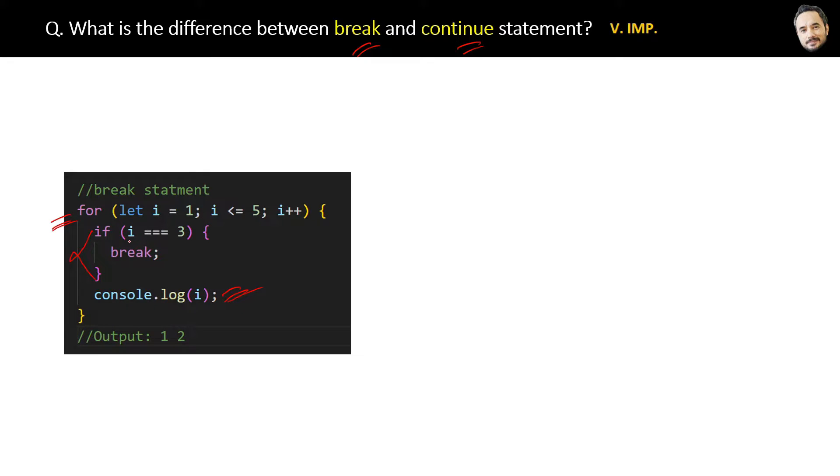one if condition here, and inside that we will put the break statement. This says whenever the value of variable i is equal to 3, then it will encounter this break statement which will just stop the execution here itself and exit from the loop. So the output will be just 1 and 2, because at 3